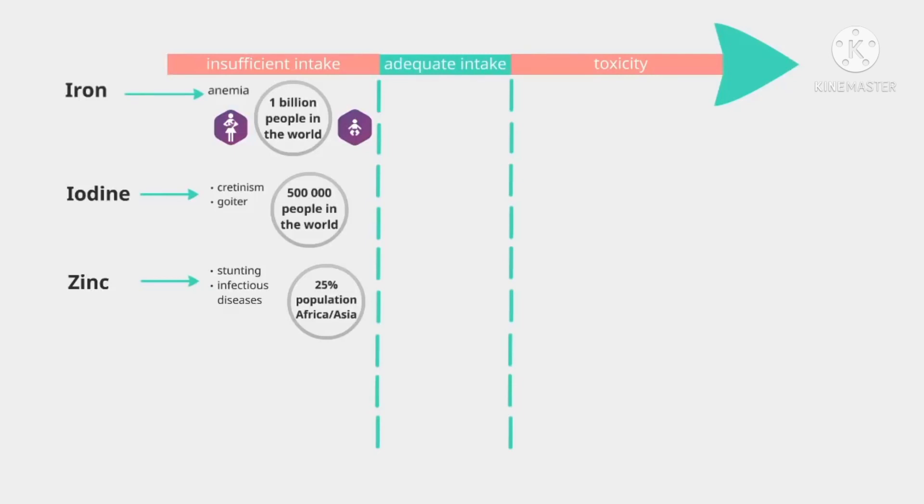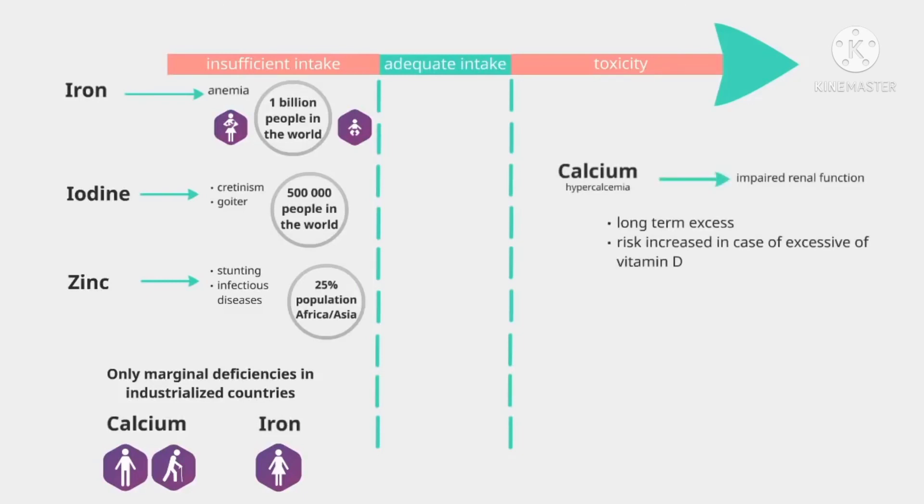In industrialized countries, only marginal deficiencies in minerals occur. This is the case for calcium in adolescents or seniors, and iron in women, influenced by menstruation. A long-term excess of calcium can lead to impaired renal function. This risk is increased in the case of excessive intake of vitamin D.